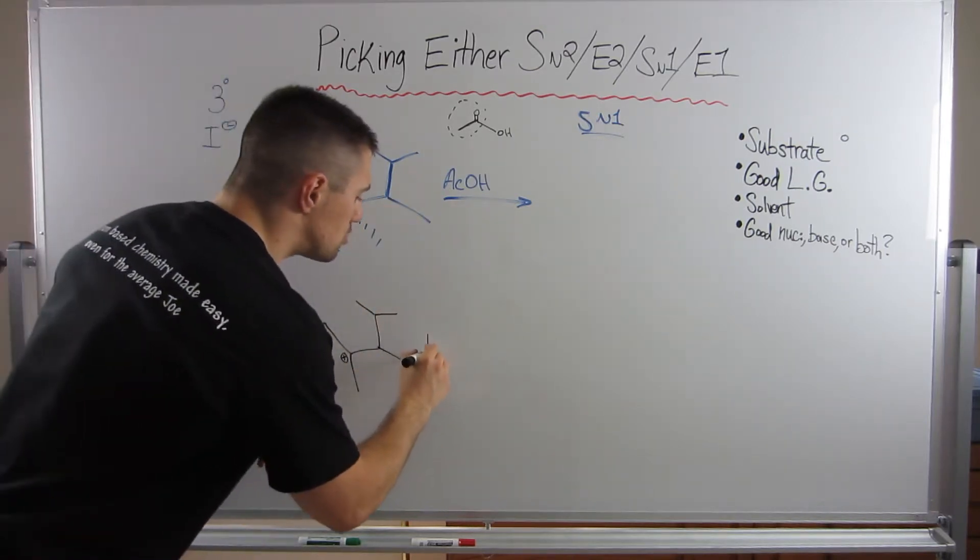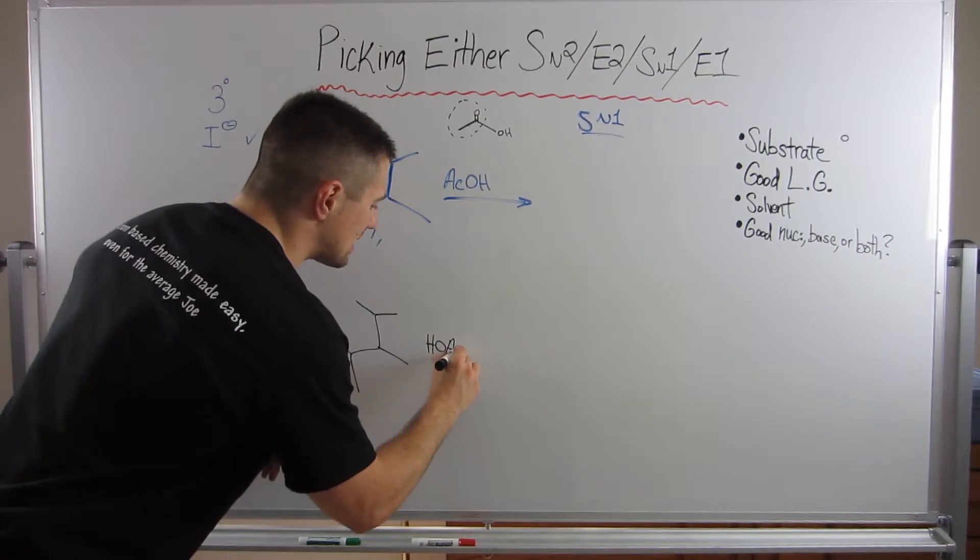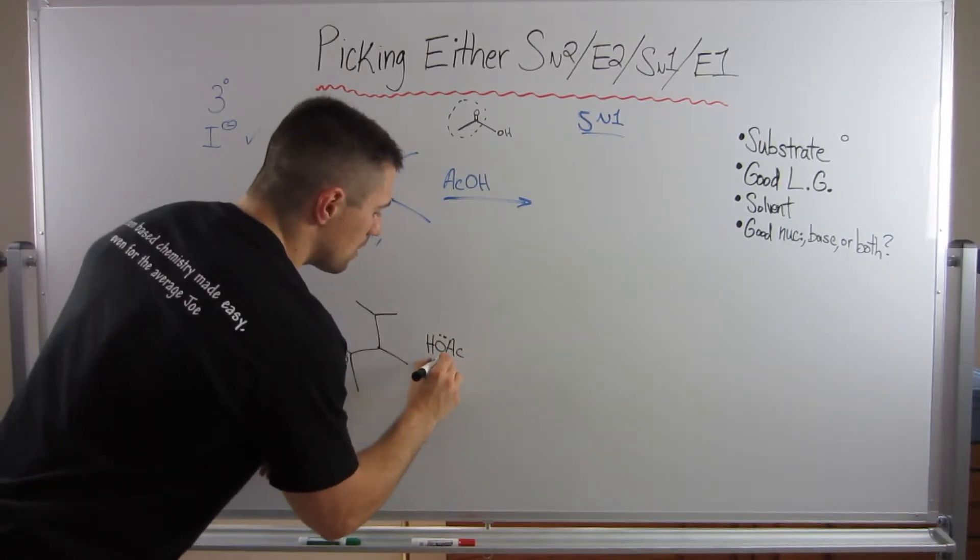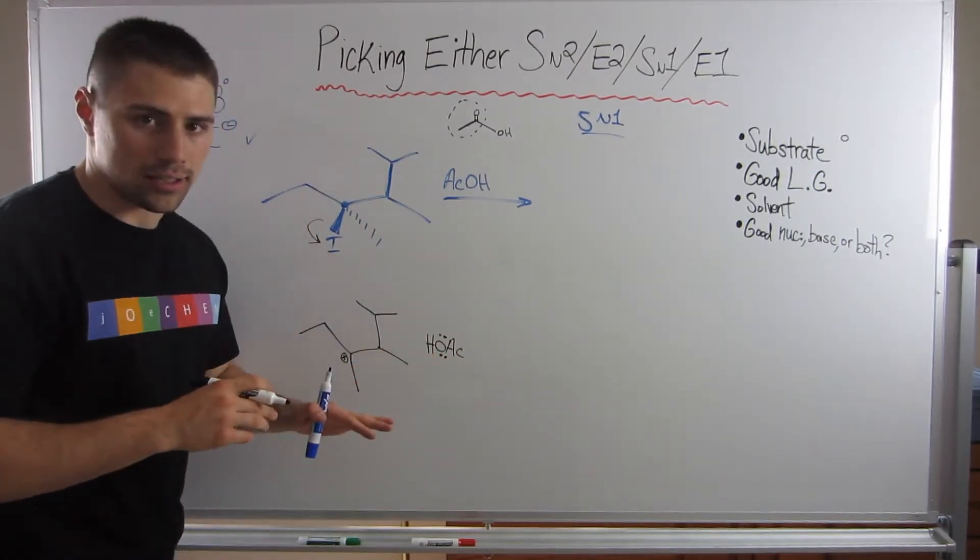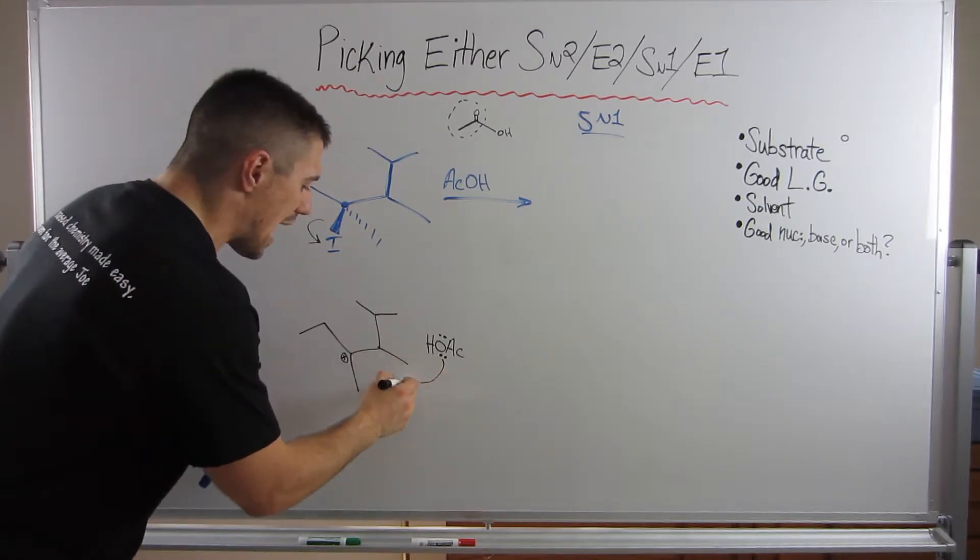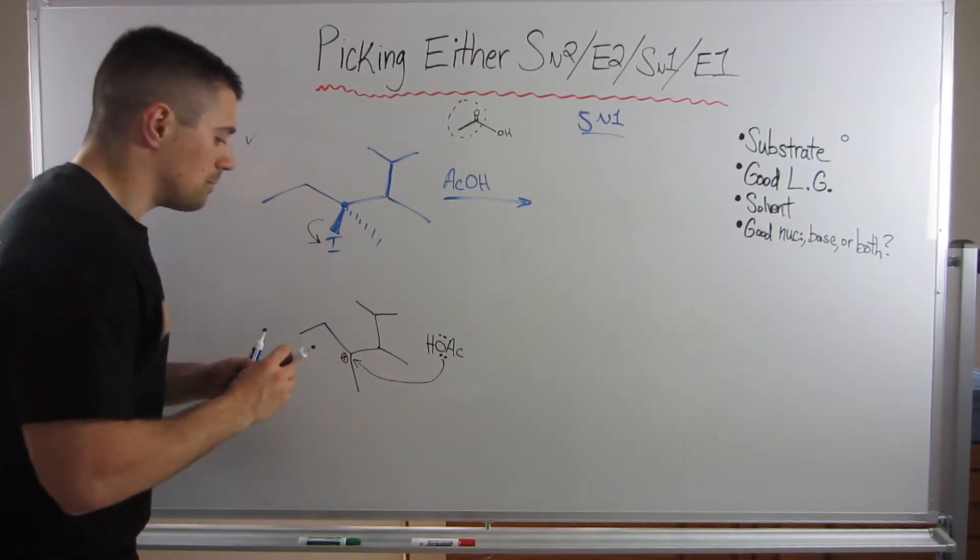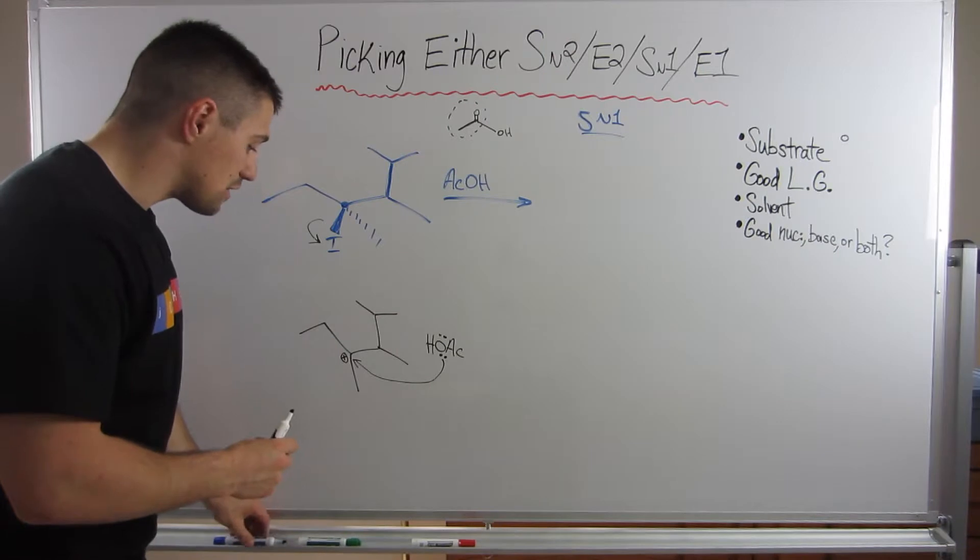So now we can show acetic acid attacking. And remember, the nucleophilic atom here is this oxygen. So I'm going to draw the attack. And remember, since we are now trigonal planar and flat, attack is going to happen from above and below in equal amounts.